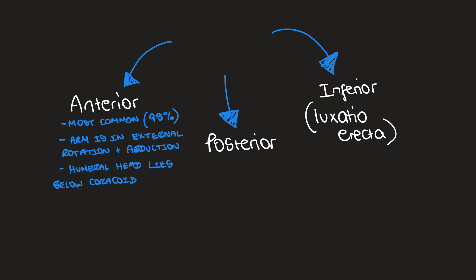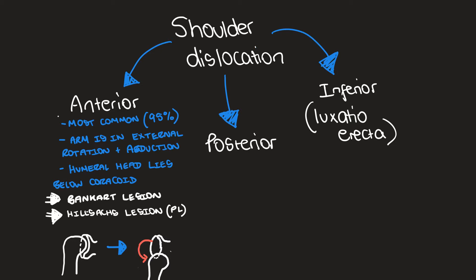Anterior shoulder dislocations are by far the most common type. The arm is in external rotation and there's forceful abduction. On an AP film you'll see the humeral head lies below the coracoid, medial and inferior to the glenoid. When you see an anterior dislocation, make sure you look for a Bankart lesion and a Hill-Sachs lesion.